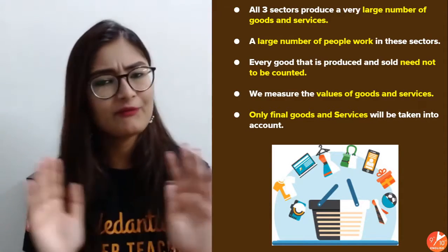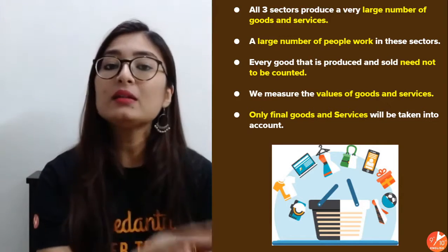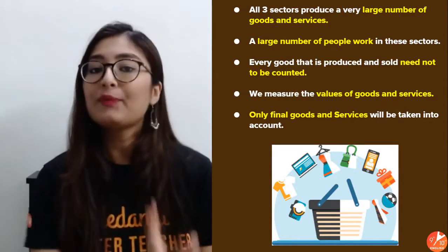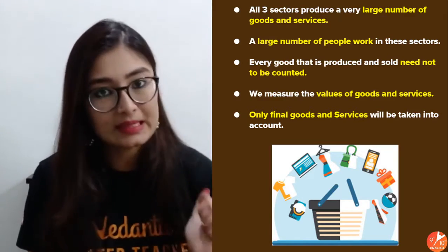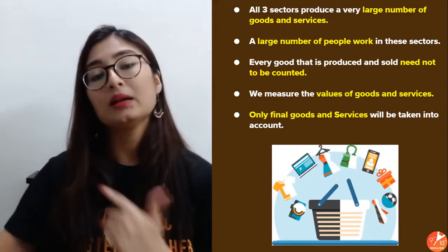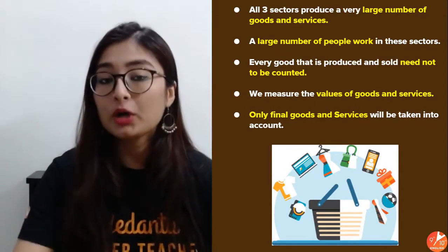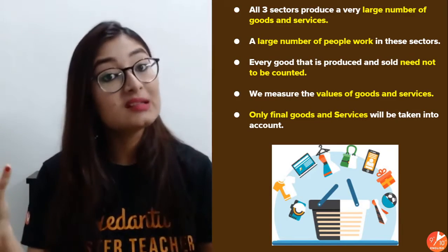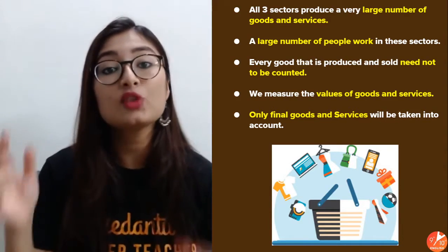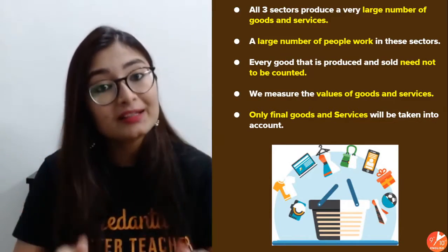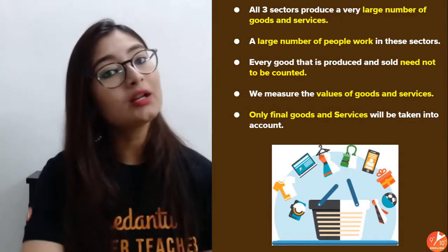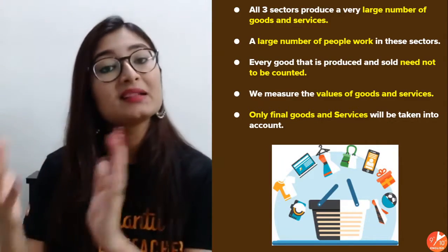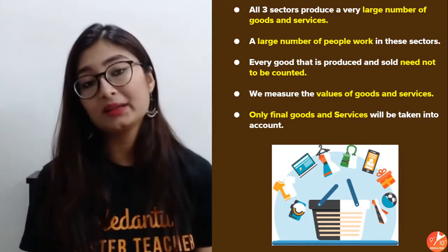For example, if I've produced 10 goods at 100 rupees each, my total production value is 1,000 rupees. But another sector also produced 10 things, each costing 1,000 rupees — making their total production 10,000 rupees. Although both produced 10 things, the value is very different — there's a 10x difference. That's why we count economic value rather than quantity. That is how the economy works — you count the economic value of goods and services, not just the number.